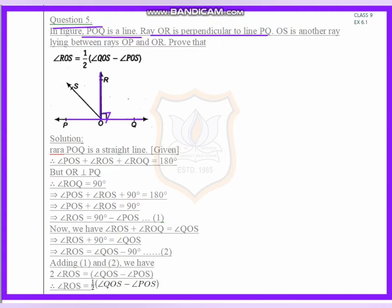This means it forms a 90 degree angle here, and OS is another ray lying between rays OP and OR. OS is between OP and OR.